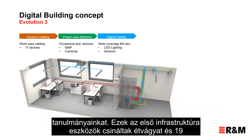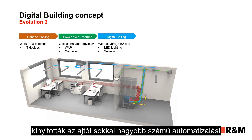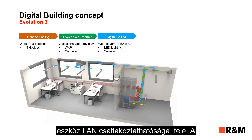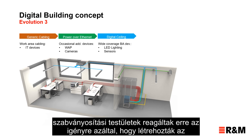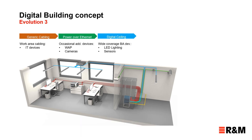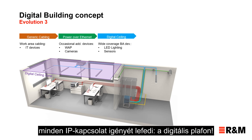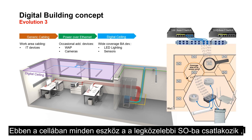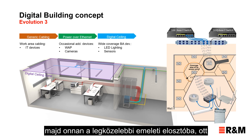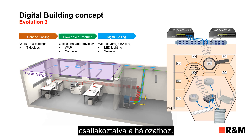These first infrastructure devices opened the door for many more building automation devices to be connected to the LAN. The standardization committees reacted to this demand by creating the ISO IEC 11801-6 standard, which specifies structured cabling in the ceiling with a service outlet covering a predefined zone for all-IP connection needs — the digital ceiling. All devices in this zone connect to the nearest service outlet and from there to the nearest floor distributor.